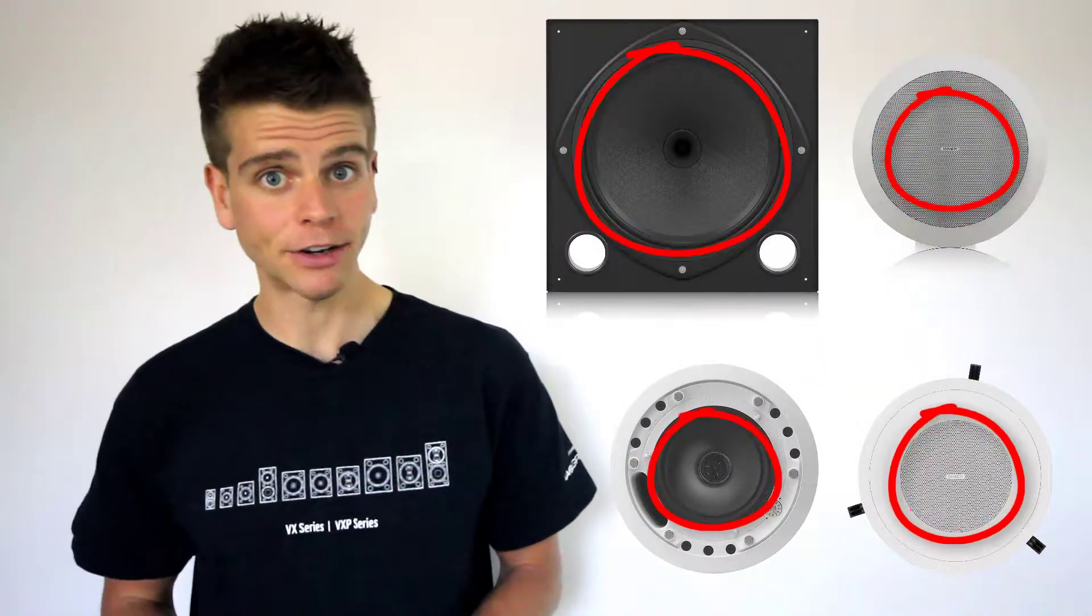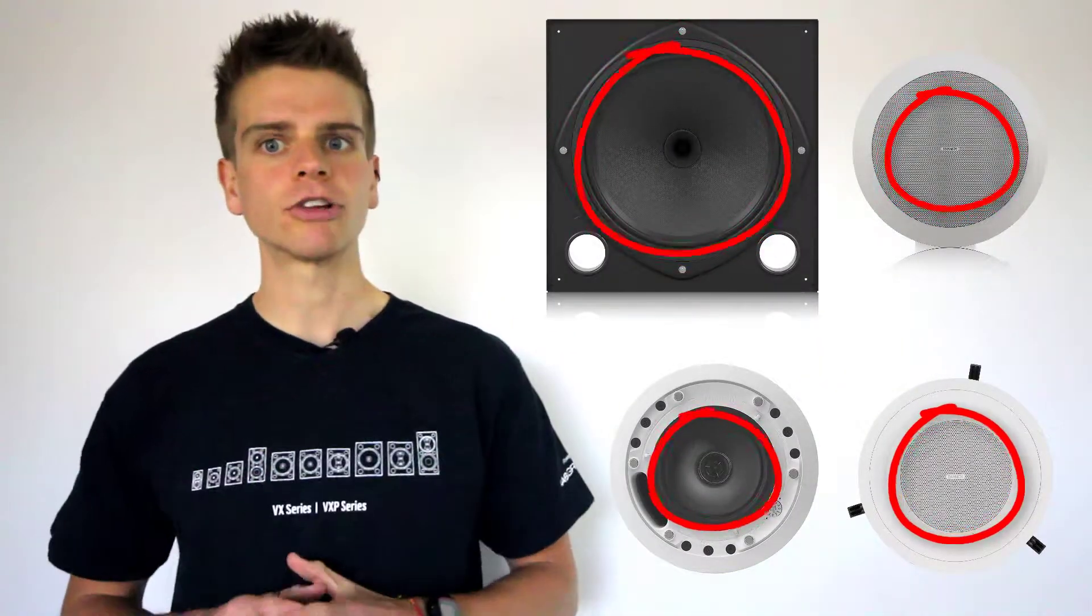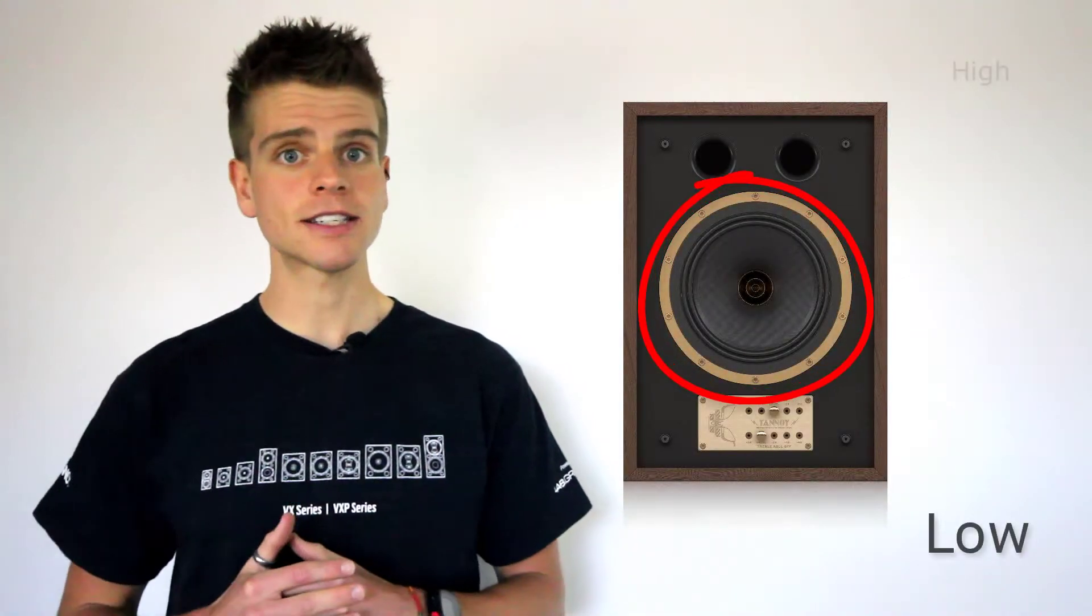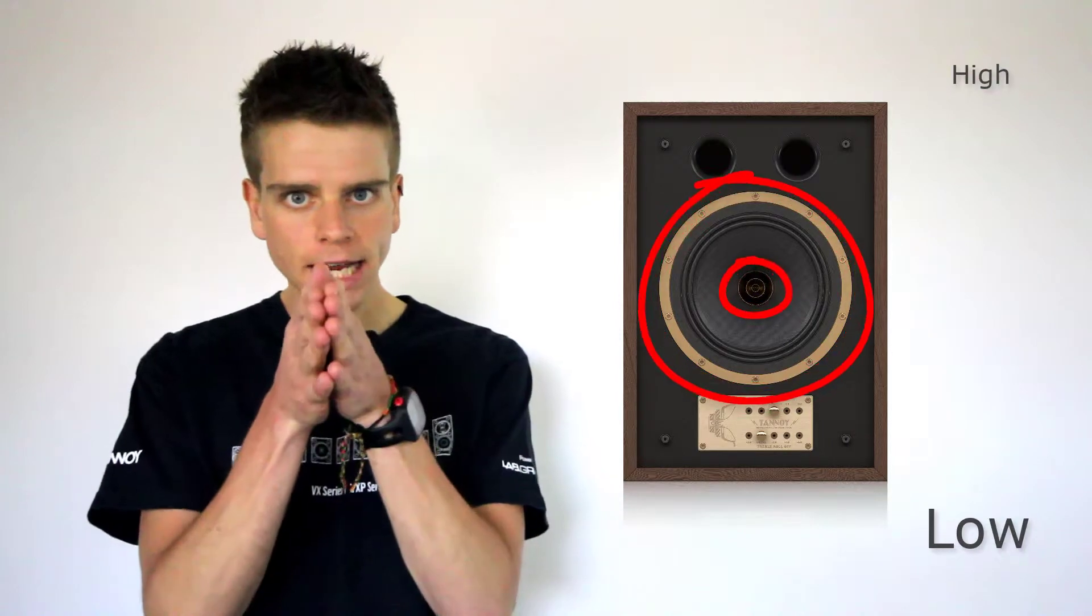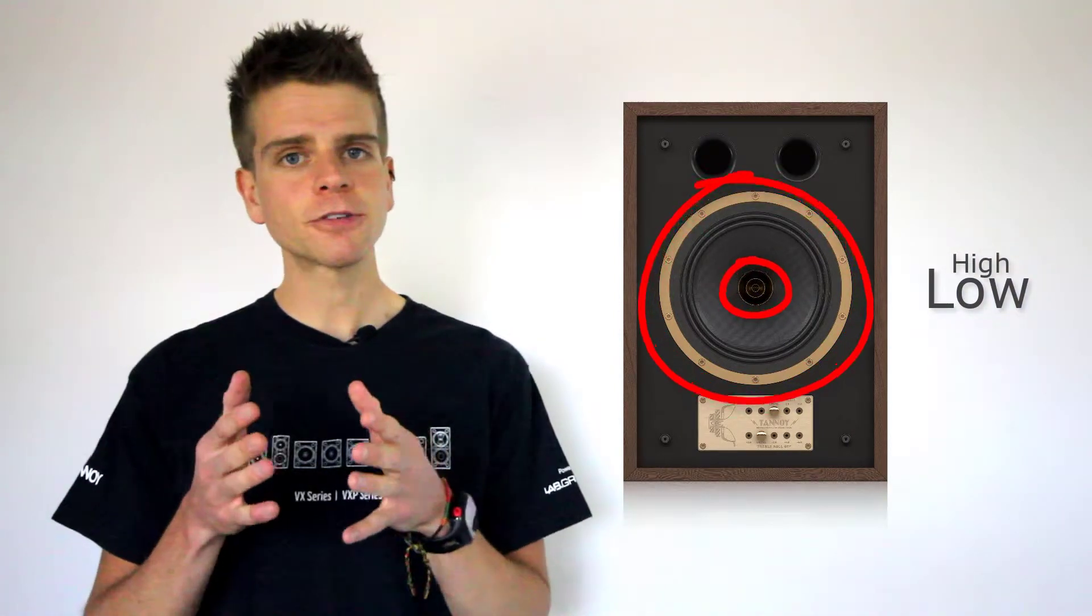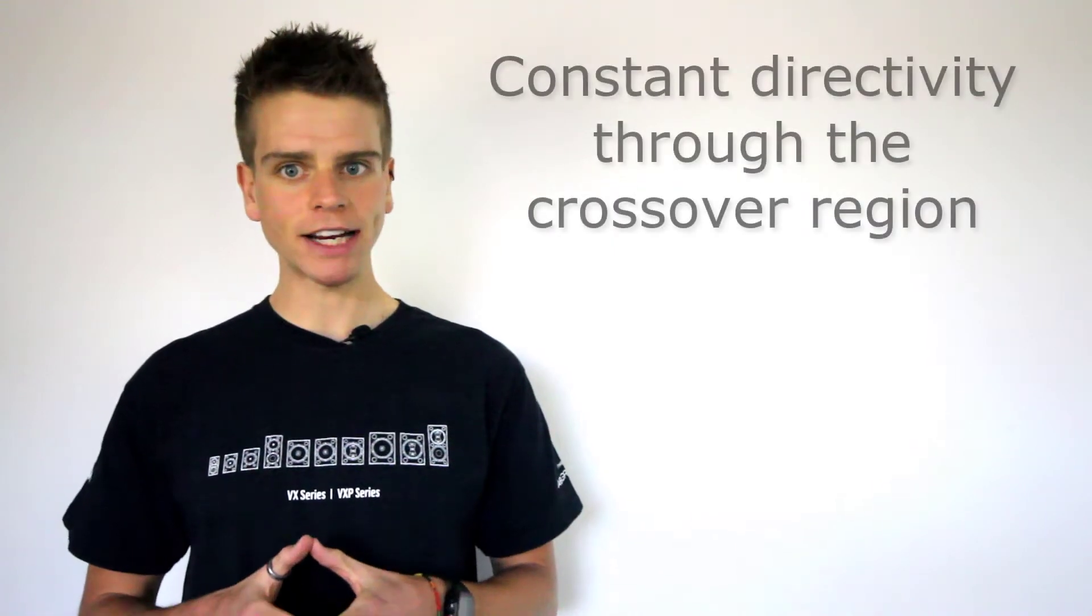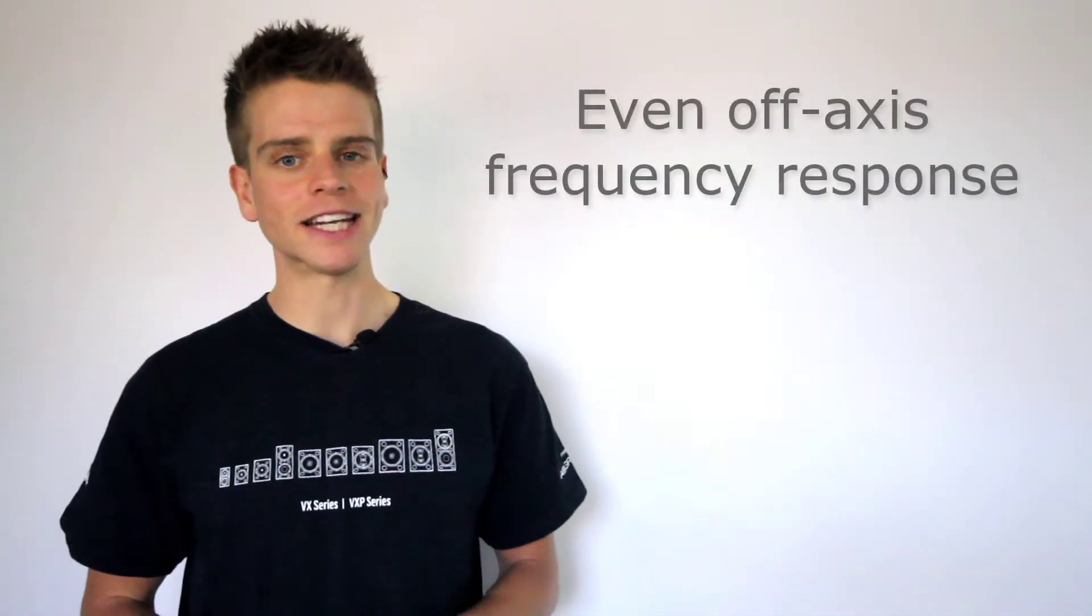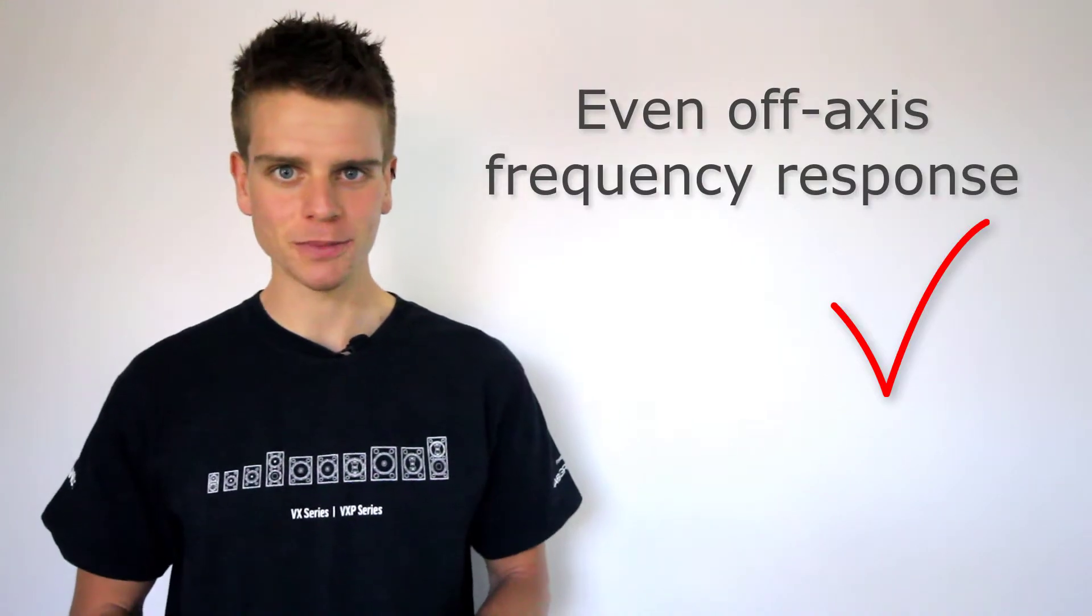Now, to offer you a more detailed explanation, a dual concentric transducer system ensures that both the low and the high frequency sound sources disperse from the same coincident time aligned point in space. And this phase coherence leads to constant directivity through the crossover region. This produces an even off-axis frequency response.